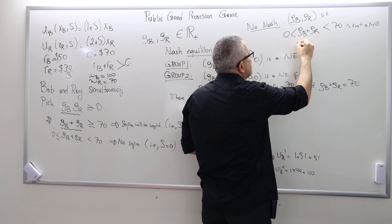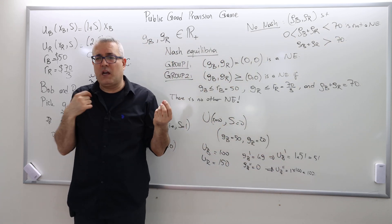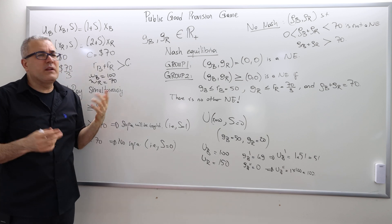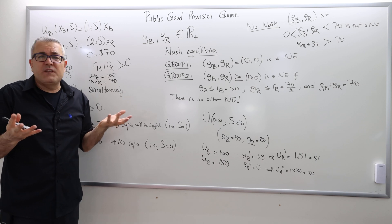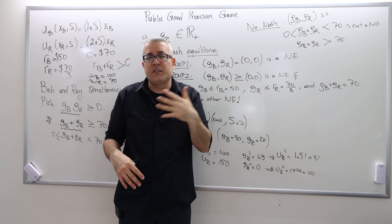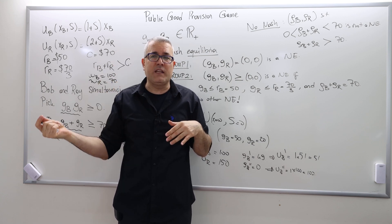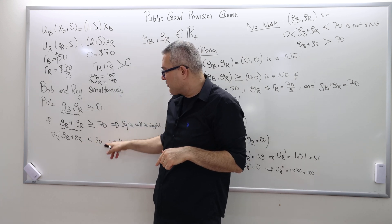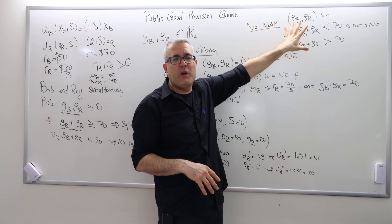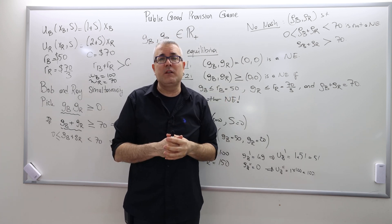If Bob pays $20 and Ray pays $20, they waste $40 and can't buy the sofa — they won't get their money back, so they'll regret not contributing nothing. Also, if G_B plus G_R is strictly greater than $70 — say $50 plus $23 equals $73 — that's also not a Nash equilibrium, because both could contribute three dollars less and still afford the sofa, using those extra dollars for private consumption instead. The assumption that extra collected money is wasted is an important assumption that makes such outcomes non-equilibria.